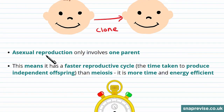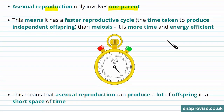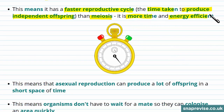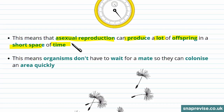Asexual reproduction only involves one parent, which means it has a faster reproductive cycle. A reproductive cycle is the time taken to produce independent offspring. So it has a faster reproductive cycle than meiosis, meaning it's more time and energy efficient. This results in asexual reproduction being able to produce a lot of offspring in a short space of time. They don't have to go looking for a mate or spend energy attracting one.